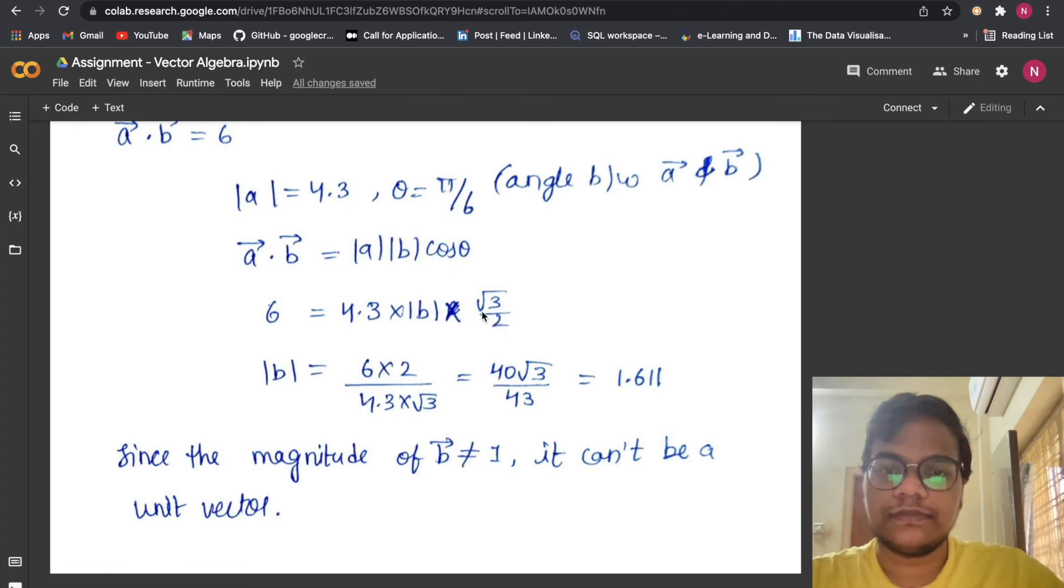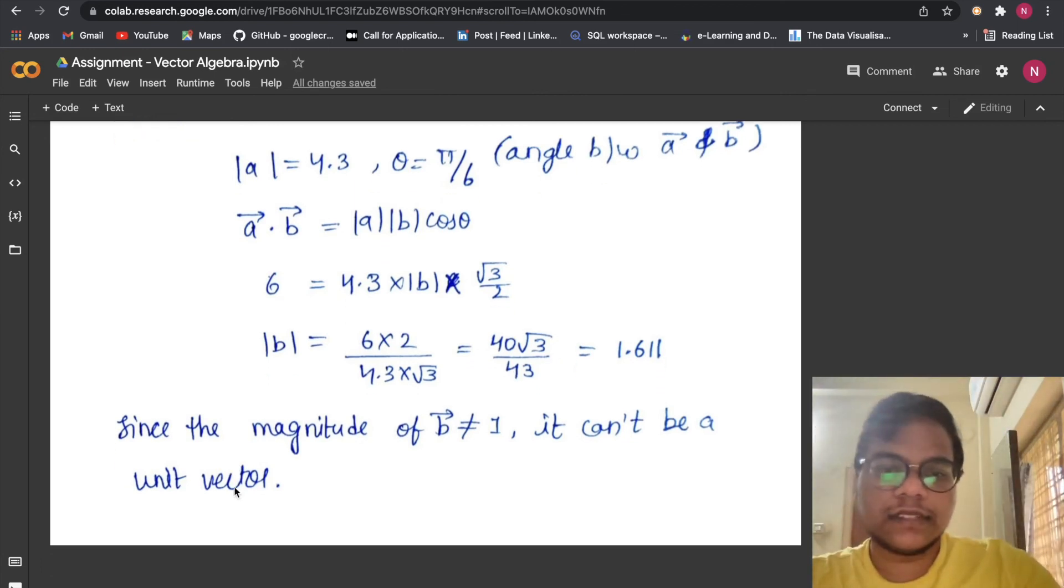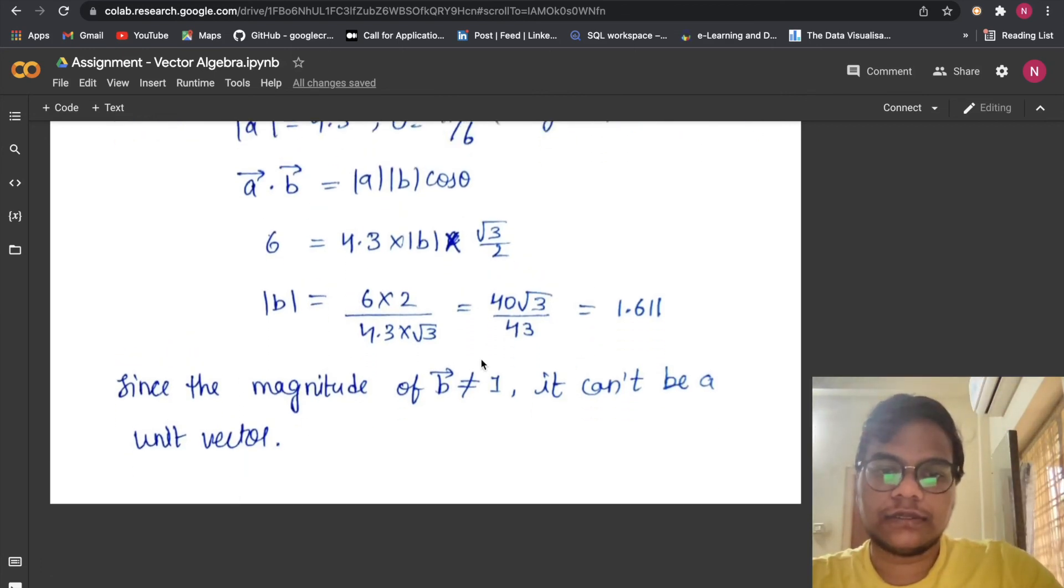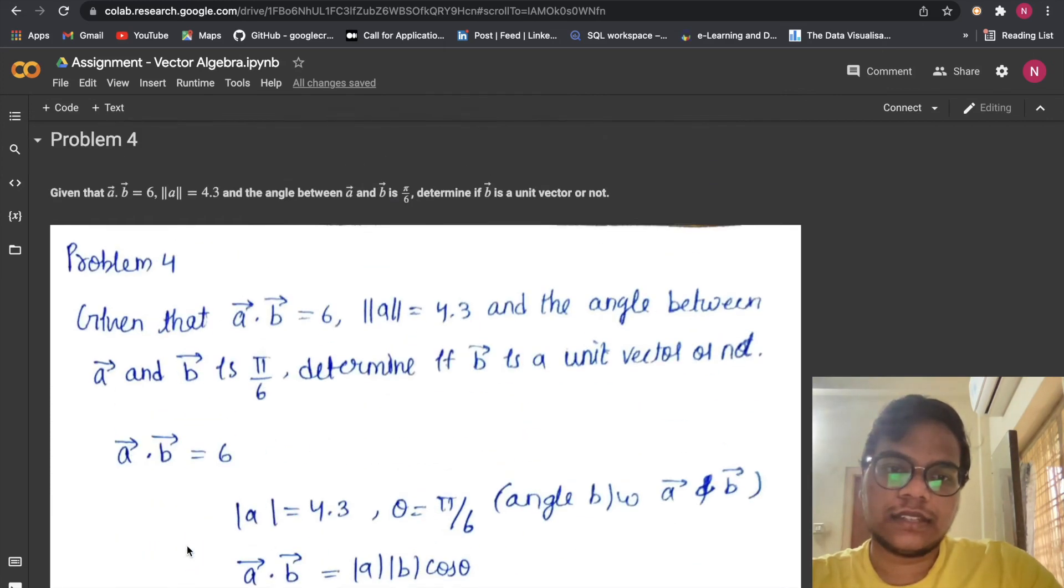You can just put those all values, you will get the result. Since the magnitude of b̄ not equals to 1, it cannot be a unit vector. That's our answer.